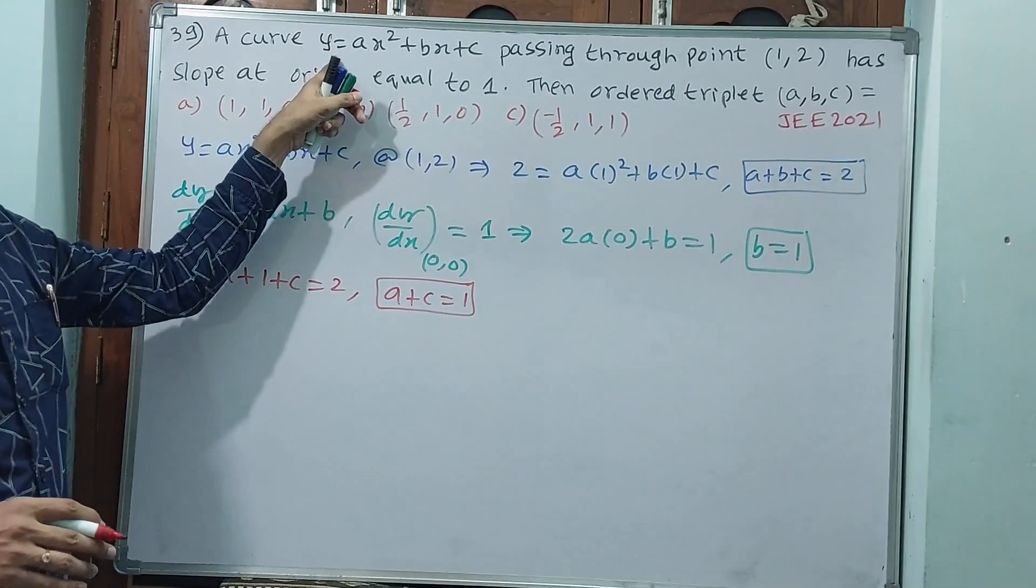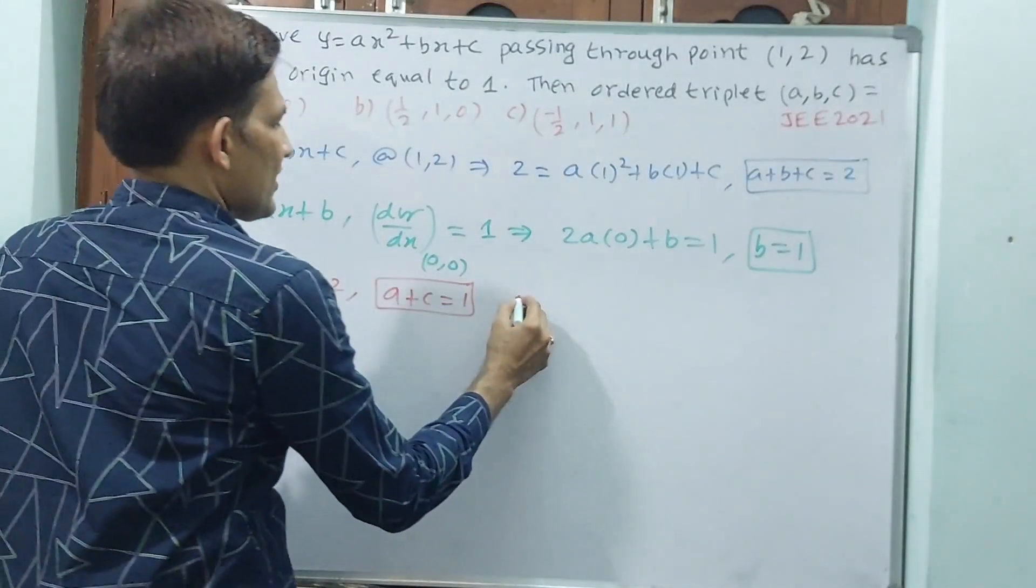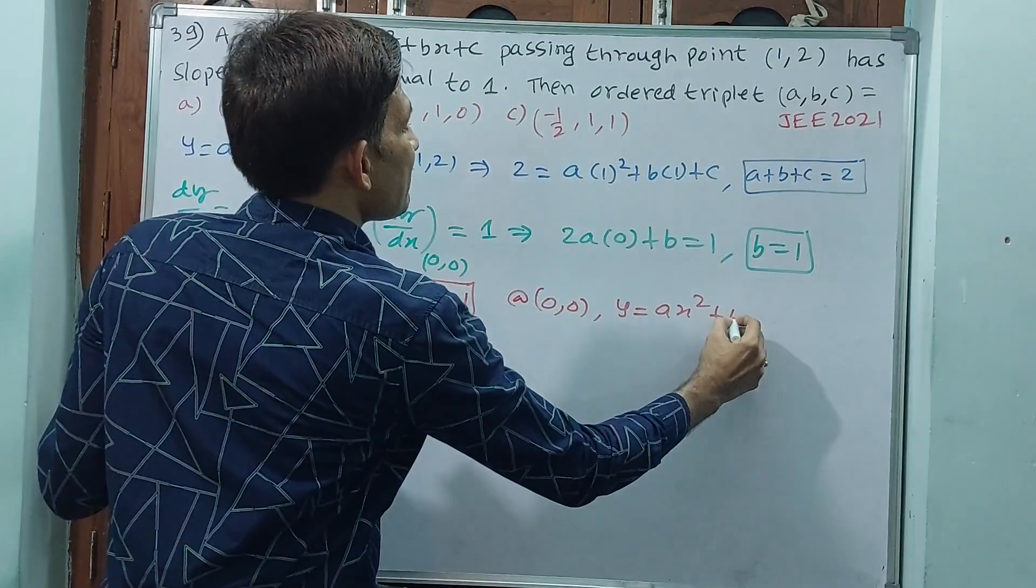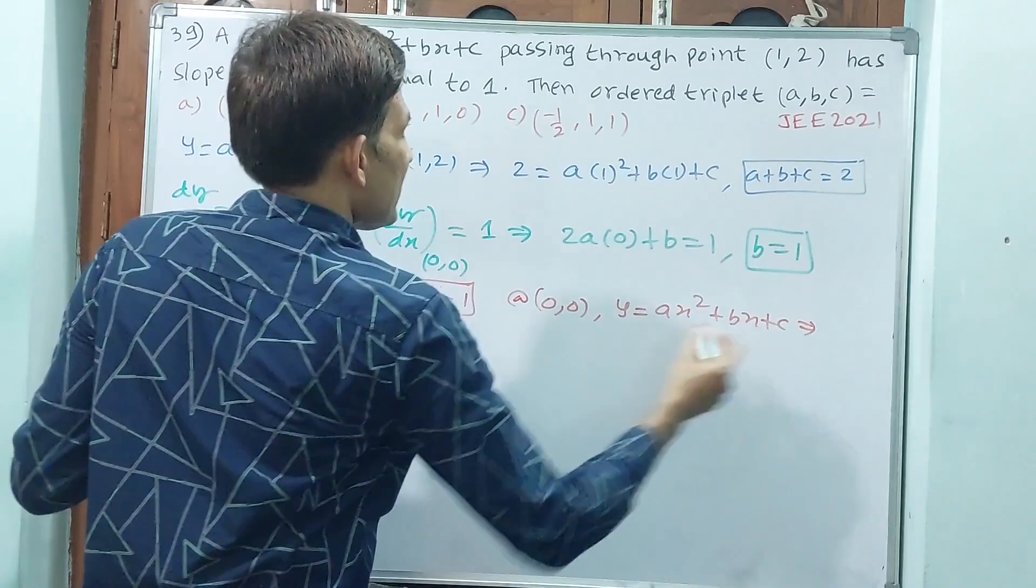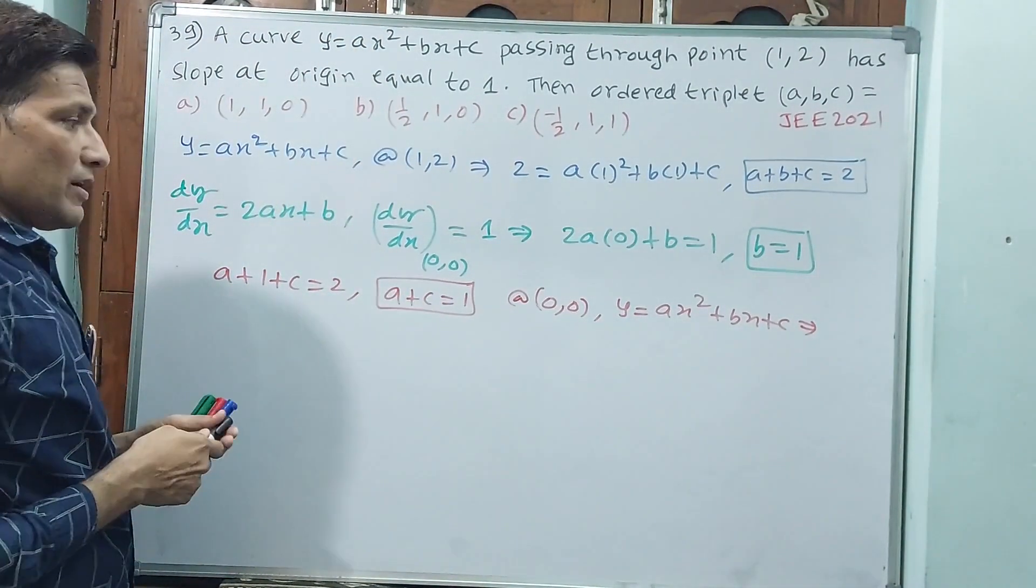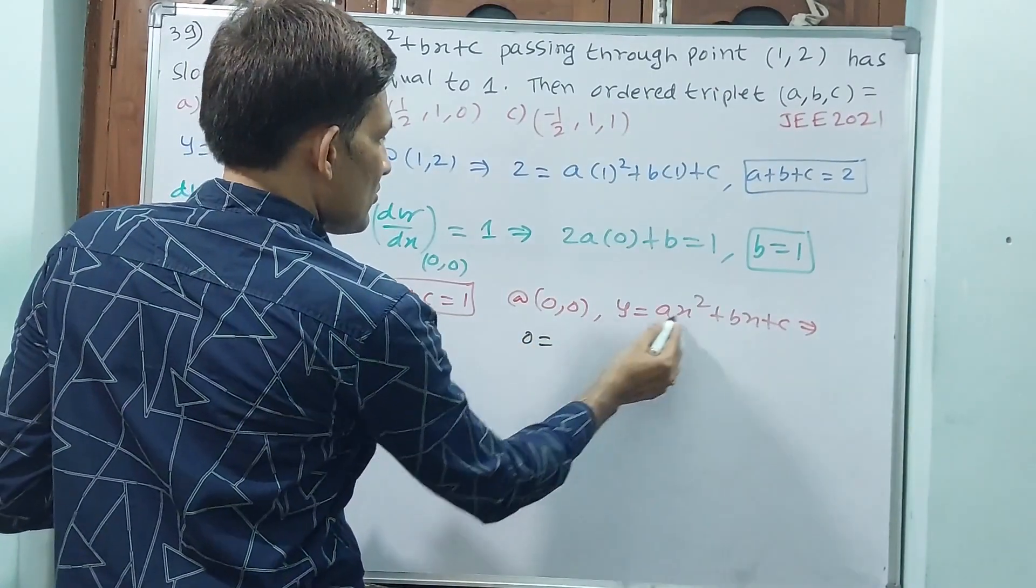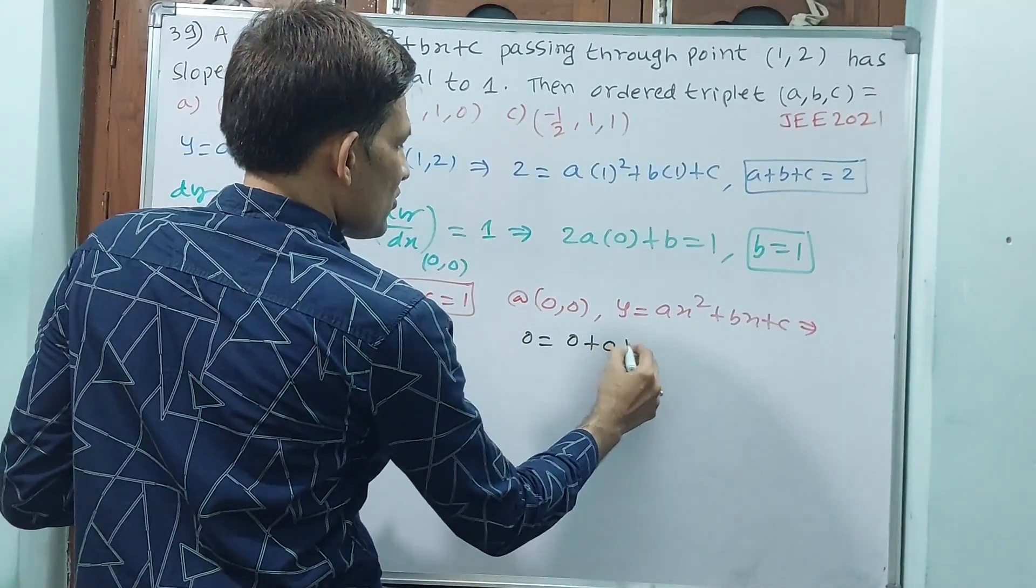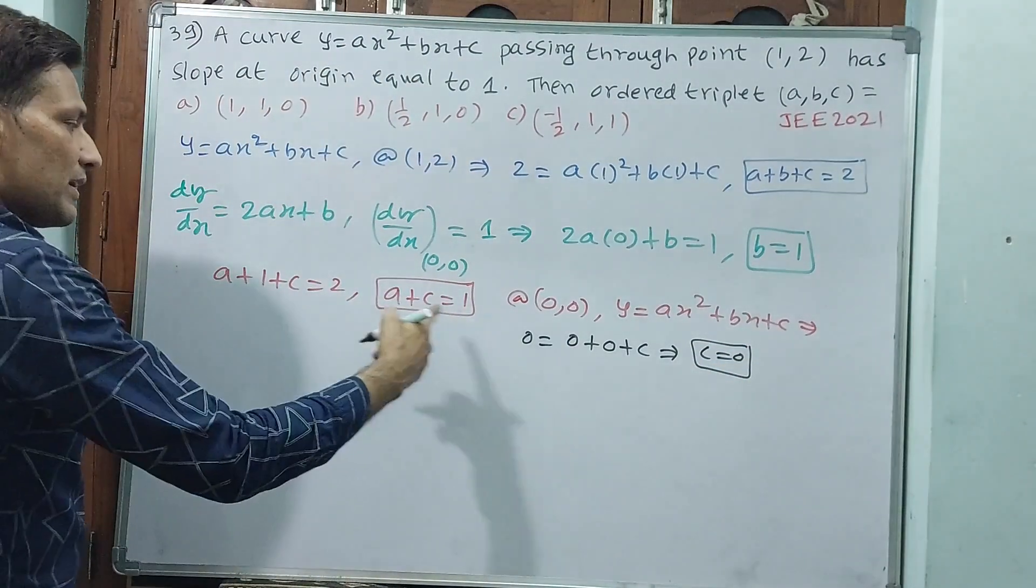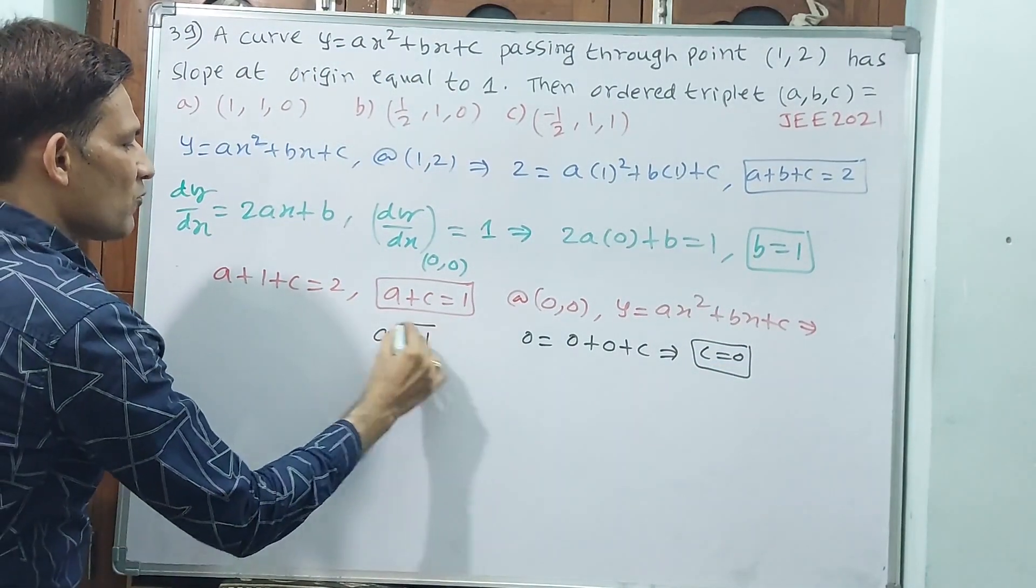Again, this (0,0) we substitute in the main equation. At (0,0), y = ax² + bx + c implies 0 = 0 + 0 + c, which implies c = 0. If c is 0, then automatically a = 1.